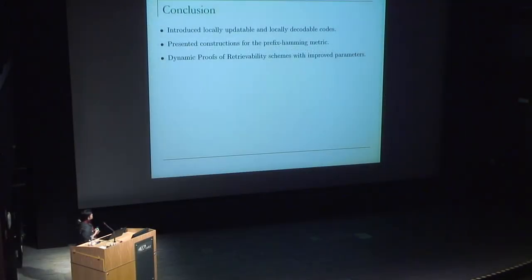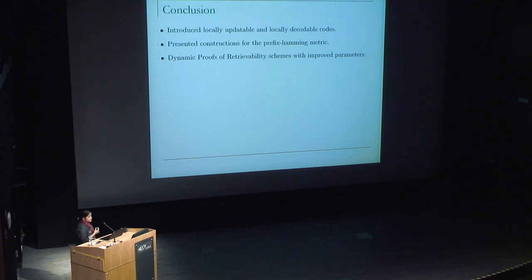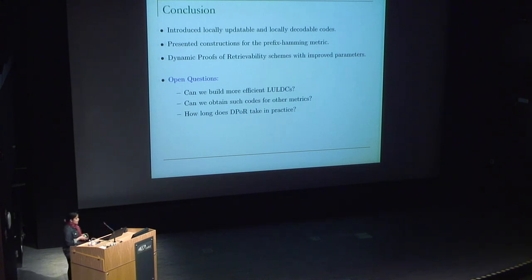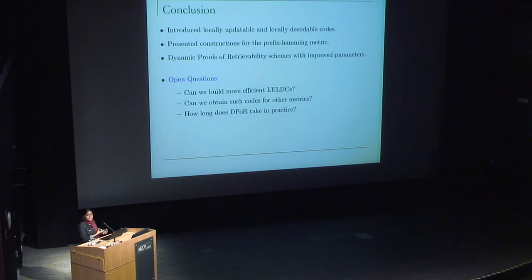To conclude, we introduced and presented constructions for locally updatable and locally decodable codes in the prefix Hamming metric, and we were able to get dynamic proof of retrievability with improved parameters. The most interesting open questions are to build LULDCs for other metrics, to obtain LULDCs that are more efficient, and since proofs of retrievability are very important in practice, to understand the practical efficiency of these constructions and see how fast they run.